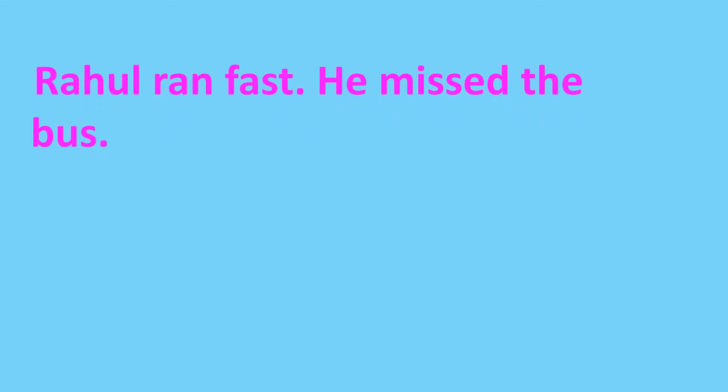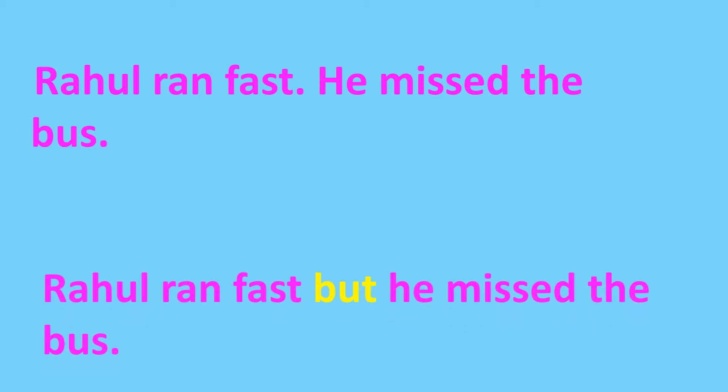Next example: 'Rahul ran fast. He missed the bus.' If you run fast, you should get the bus — but here he missed the bus, which is something unexpected and contrary. When something contrary happens, we use 'but.' So: Rahul ran fast but he missed the bus. If he runs fast, he should get the bus — but he missed it. Contrary.